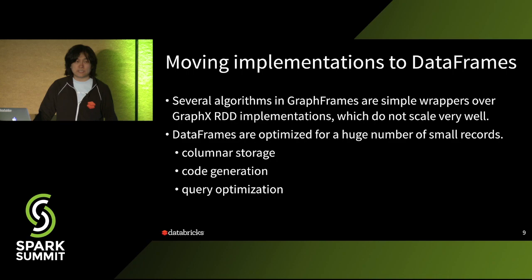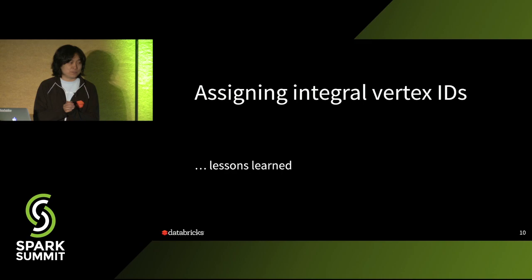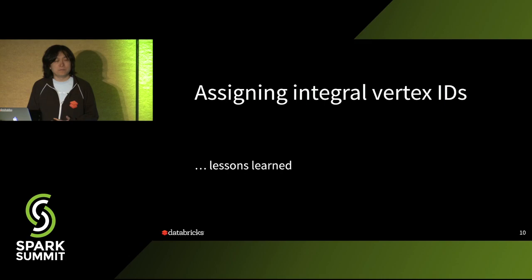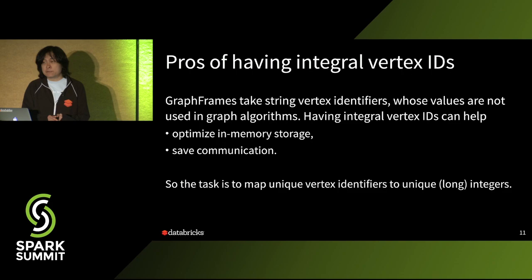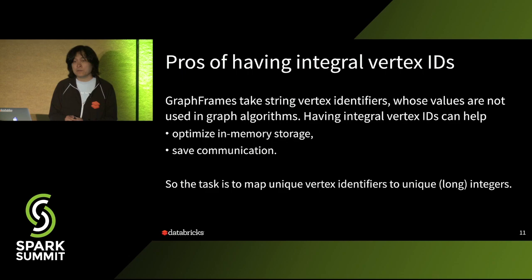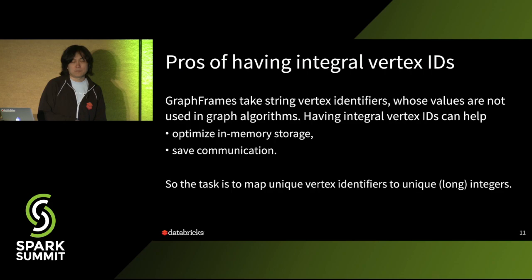We definitely want to move more algorithms to DataFrames, and this talk is about the lessons we learned from the first several tries. The first challenge we hit is getting ID assignment to vertices in a graph. It seems simple, but it took us a long time to figure out the right way to do it. GraphFrames allows users to put string IDs for convenience, but in order to implement some graph algorithms you need to shuffle vertex IDs around, so you don't want each vertex ID to be maybe one kilobyte of data. You want to convert them into smaller, simpler data — just long integers.